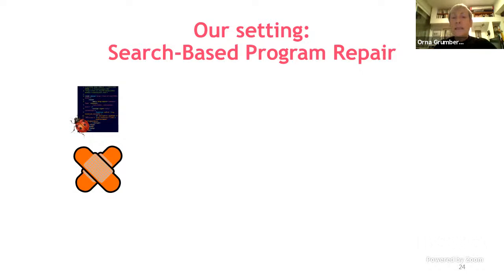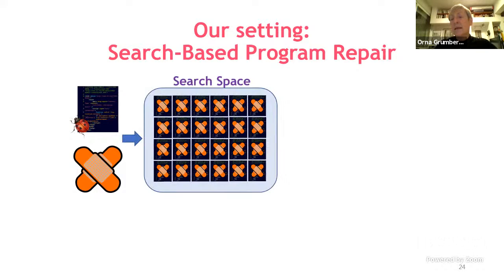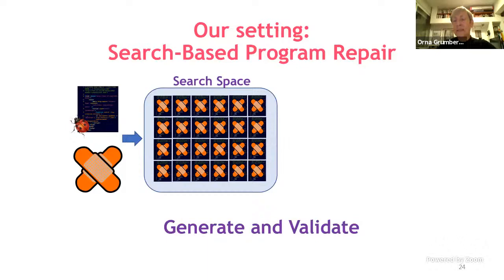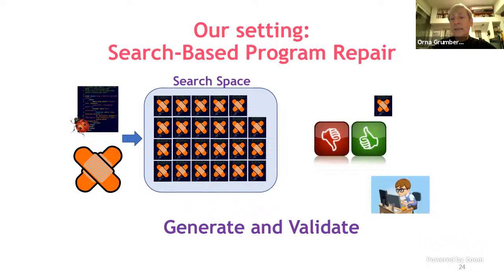The program repair we use is search-based. The search space consists of all possible patched programs; we generate one program at a time and validate whether it's correct. Validation is done by means of SMT or SAT solvers. We generate one program, and if it's correct it is returned to the user; otherwise it is discarded.